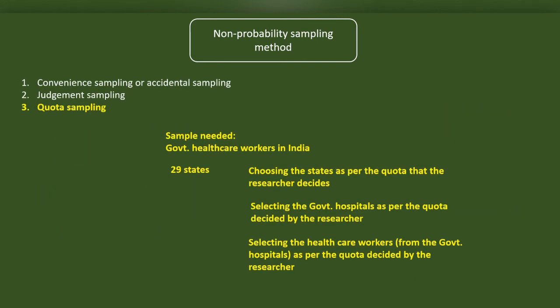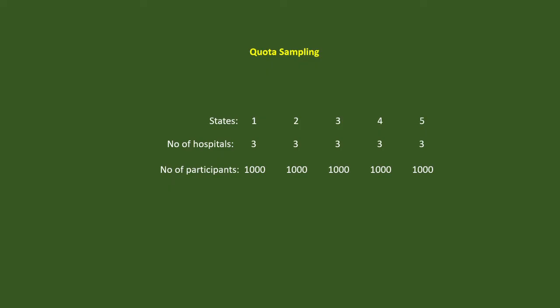Quota sampling has a similarity to stratified random sampling. We will decide specific quotas for each category in the sample. For instance, we conduct research among government healthcare workers in India. We will deliberately choose states which are easily accessible to us. In each of these five states, we will decide as per our accessibility the hospitals from where we may collect data. From these hospitals, we may select the healthcare workers again as per our accessibility to them.